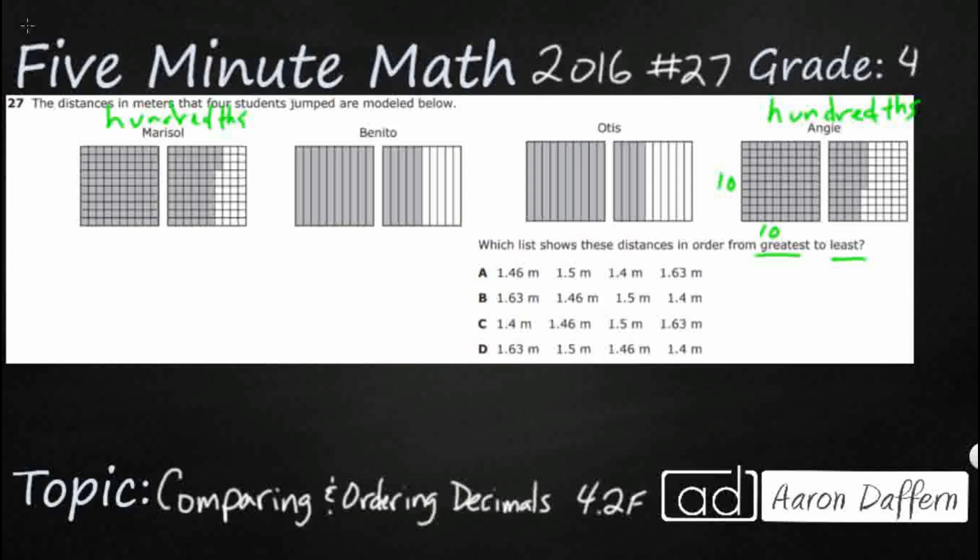But what we see for Benito and Otis are different. They are simply going to the 10ths because it's really just 10 different columns. And so, those are going to translate differently into what we see here. So, let's see if we can kind of figure them out.